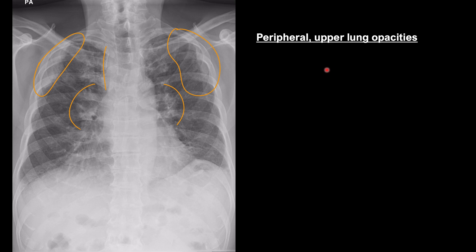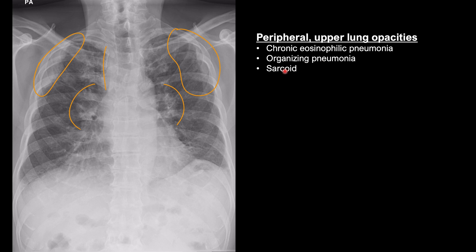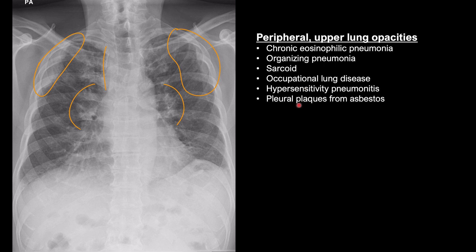Things I would think about for the peripheral findings include chronic eosinophilic pneumonia, which is classically described as the photographic negative of pulmonary edema, organizing pneumonia, sarcoid, occupational lung disease, maybe hypersensitivity pneumonitis, and maybe pleural plaques from asbestos exposure, although these are usually more in the lower thorax.